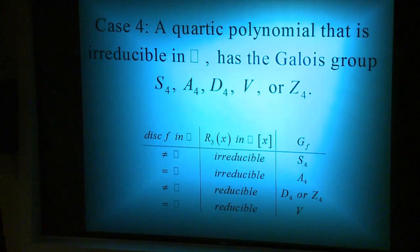This chart will help to attain the group of a particular quartic. If it meets certain criteria, say that its discriminant is a square and it's reducible, then we have S4, and so on and so forth. With these particular types of criteria, you can actually get the Galois group for a particular quartic.